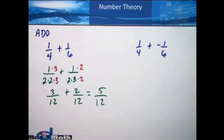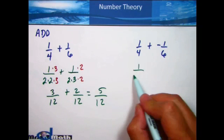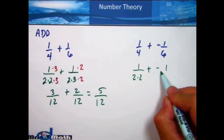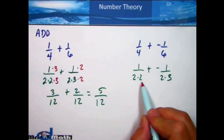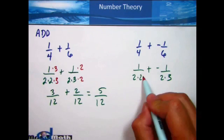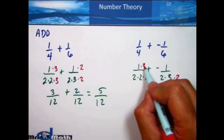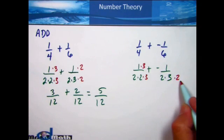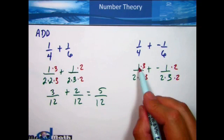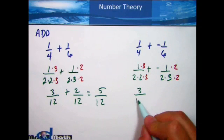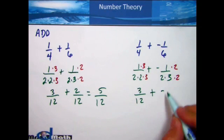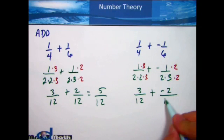Let's take a look at what happens if it's negative — the exact same thing. I'm going to start off using my factors just like before: 1 over 2 times 2, plus negative 1 over 2 times 3. This one needs a 3, this one needs a 2. If I do a 3 on the bottom, I do a 3 on the top. If I do a 2 on the bottom, I do a 2 on the top. Now I have 1 times 3 which is 3, over 2 times 2 times 3 which is 12, plus negative 1 times 2 which is negative 2, over 2 times 3 times 2 which is also 12.